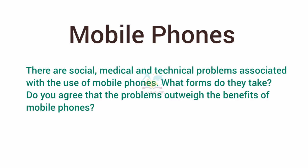Next topic is mobile phones, related to technology: 'There are social, medical, and technical problems associated with the use of mobile phones. What forms do they take? Do you agree that the problems outweigh the benefits of mobile phones?' This covers two parts, so you need to answer both questions in two different body paragraphs with proper explanation and examples. A third body paragraph is optional if you are separating social, medical, and technical problems.